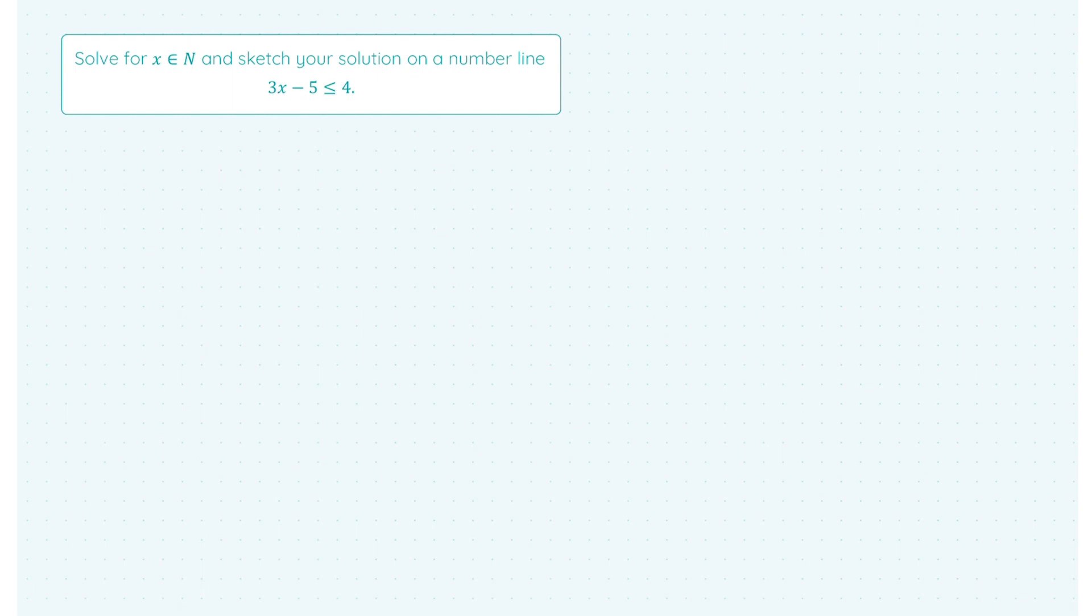First up, I'm going to solve for x an element of N, which are the natural numbers, and sketch your solution on a number line. We've 3x - 5 ≤ 4. When we're dealing with these linear inequalities, you're going to basically treat it like a linear equation. You're going to try and get the letters on the left-hand side and the numbers on the right, and just imagine the inequality sign like an equal sign.